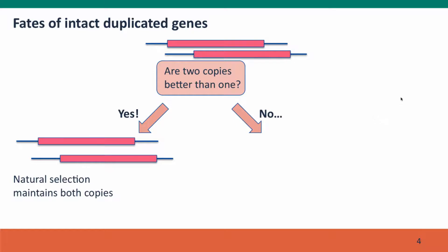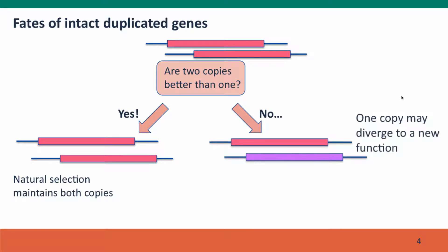But what if two copies aren't better than one? It still doesn't have much immediate impact on the organism, but it creates the potential for the evolution of new gene functions. One possibility is that one copy will be selected to maintain the original function, but the other copy — perhaps after suffering a mutation that caused it not to serve the original function — still retains most attributes of a functional gene: promoters, start codons, stop codons. And so it can, by mutation, diverge into a form that serves a new, probably related function.